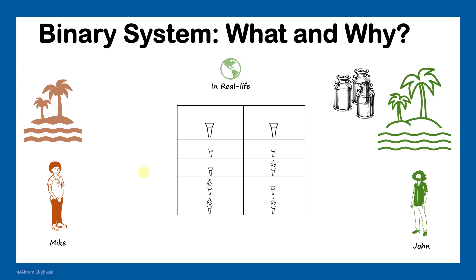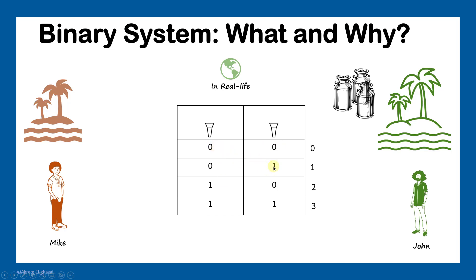They agreed on a table: both off represents zero, first on and second off represents one, first off and second on represents two, both on represents three. To simplify the table, the torches are replaced with zero or one — if the torch is off it becomes zero, if it's on it becomes one. This system consists of only two states, either zero or one, on or off. This is why we call it a binary system.